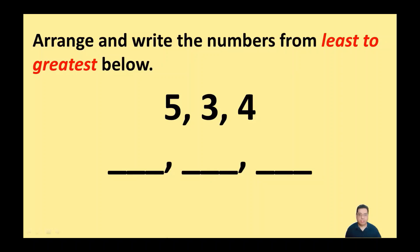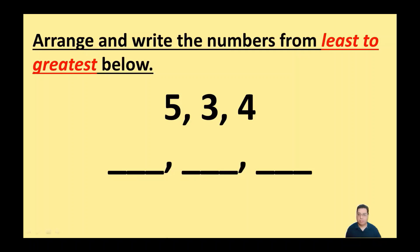I'm going to use the same directions here as I did previously and we're going to arrange and write the numbers from least to greatest below. I've got these three numbers here — which number am I going to put first? Which one is the least or the smallest number? Yes, that's three, and then what's the next number after that? That's right, it's four.